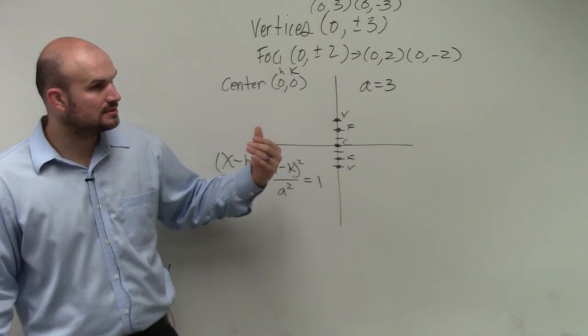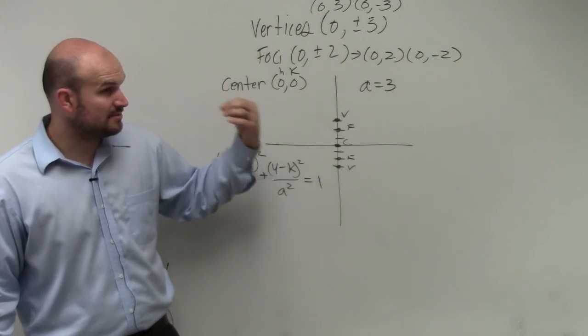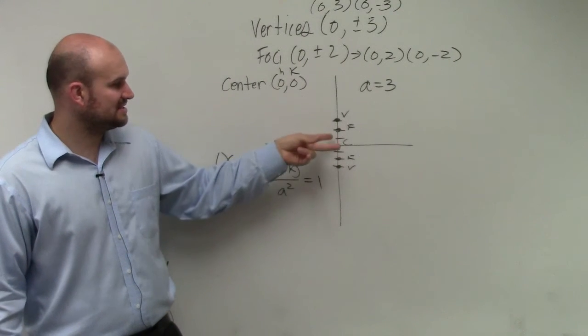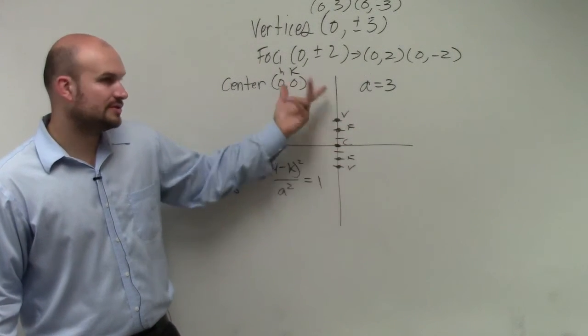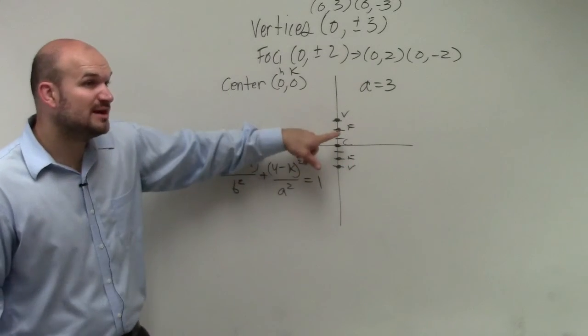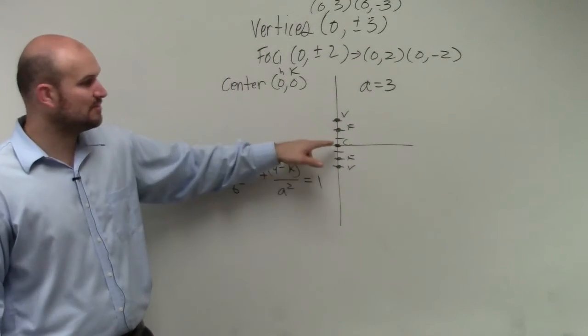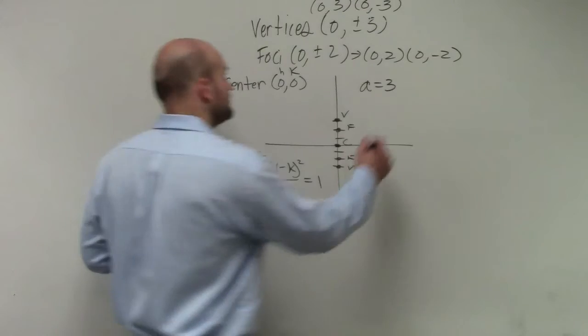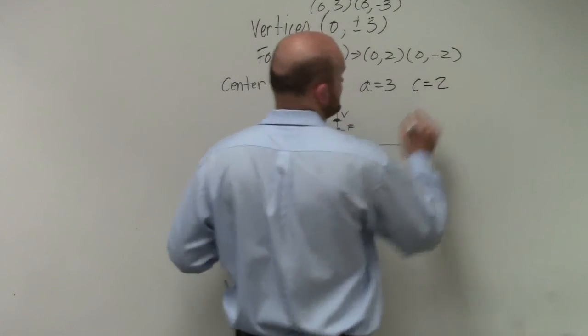So how'd you get a equals 3? Distance, because remember, a is the distance from the center to your vertices. So 1, 2, 3, so that's common. However, I do have the foci. So the distance from the center to the foci is 2, which is c.